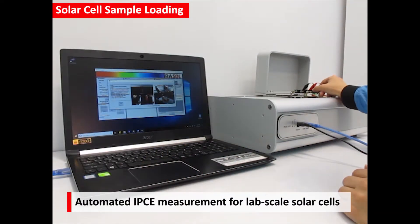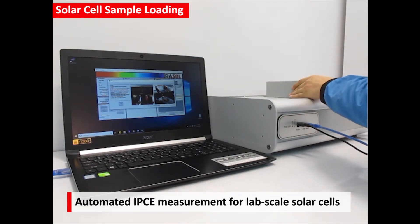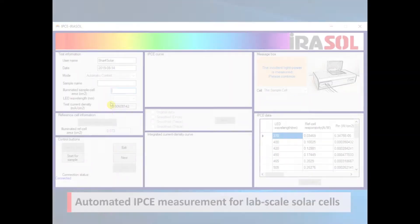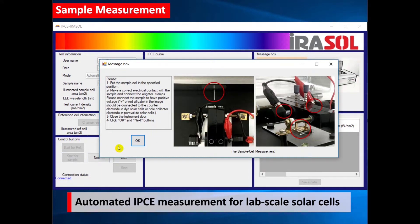The stage is then shifted to the sample measurement position, and the lid is closed. Now in the software, type the sample name and active area, and you are ready to start the measurement.